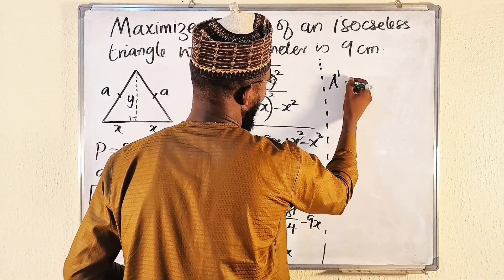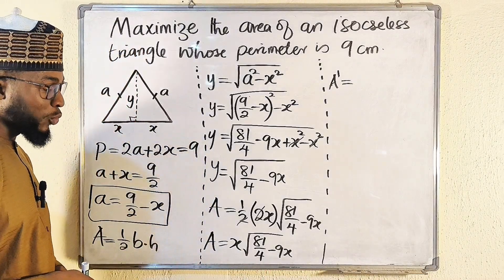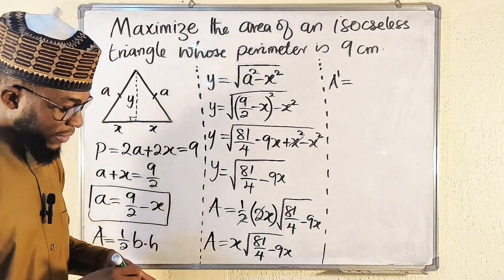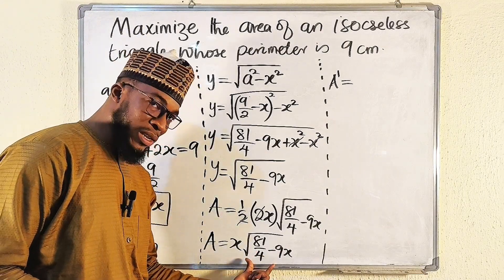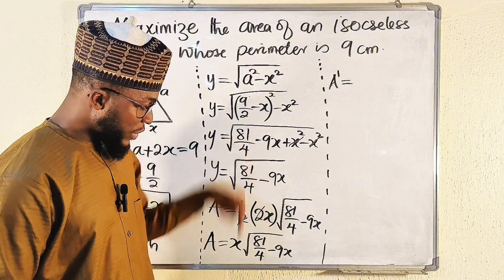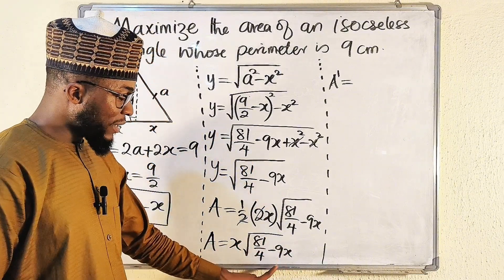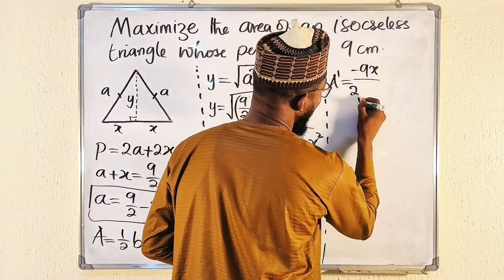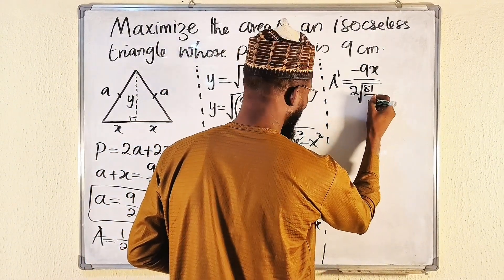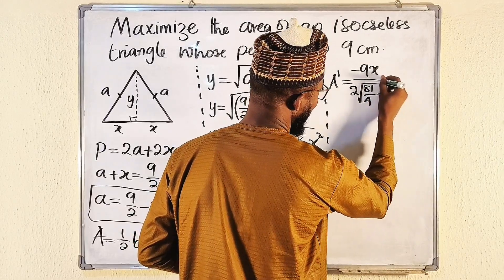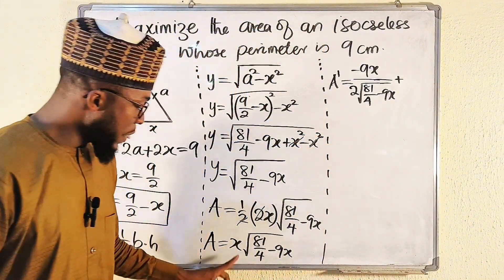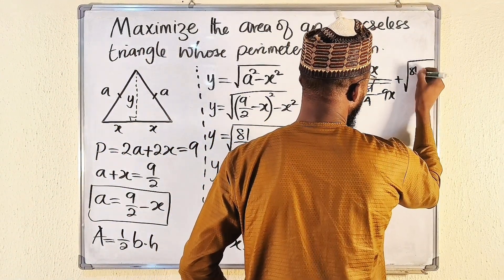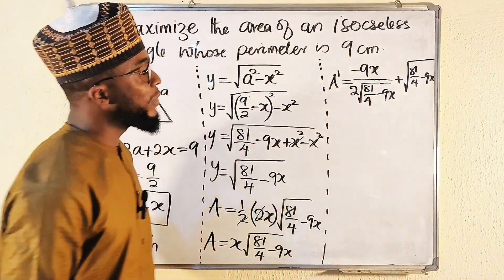We want to find A′. Since we have two functions multiplied together, we apply the product rule. Keeping x constant and differentiating √(81/4 − 9x): the derivative of the inner function is −9, so the derivative of the square root term is −9 divided by (2√(81/4 − 9x)). Then we add the term where we keep the square root constant and differentiate x, giving √(81/4 − 9x).